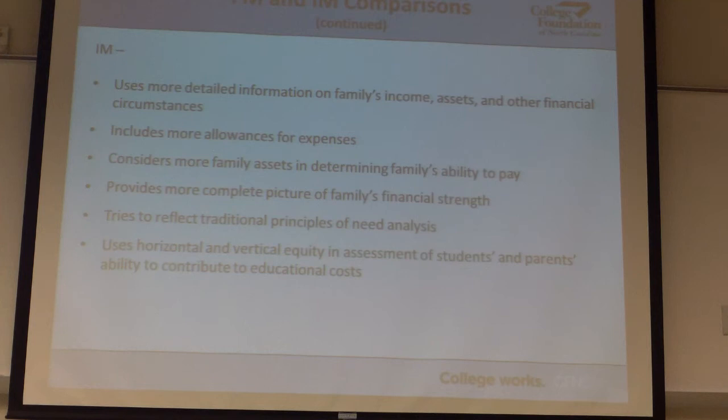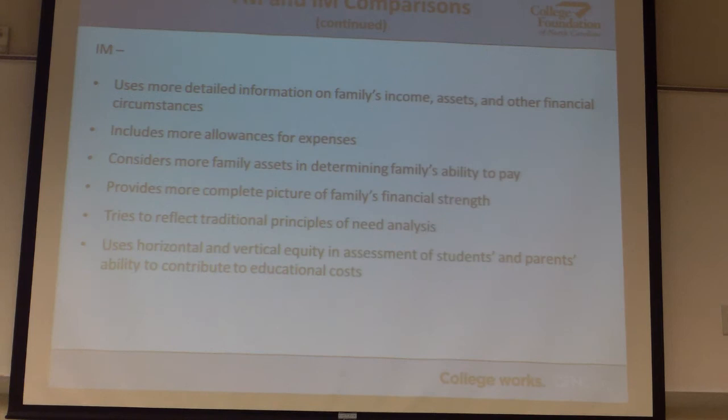The average student funded at Duke who has high need — we're probably spending $58,000 in institutional grant aid on that student. Before you invest that much of a donor's money, you want to make sure it's going to a student who really needs it. We'd like to be that vigilant with taxpayer money too, but balancing it with access is tricky — that's why you see FAFSA asking fewer questions. Any questions about that, or why and how it's used?